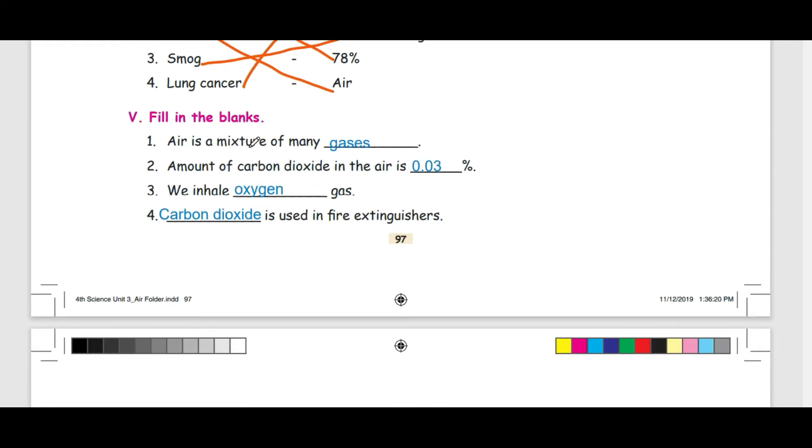Fill in the blanks. Air is a mixture of many gases. Amount of carbon dioxide in the air is 0.03%. We inhale oxygen gas.